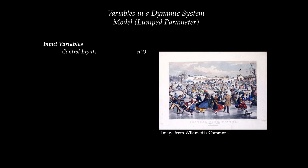We need to distinguish between control inputs and exogenous inputs, sometimes known as disturbances. An exogenous input is one the environment exerts on you that you have no control over. For example, a wind gust or a push from another person while ice skating is an exogenous input. We'll denote control inputs as U(t) and exogenous inputs as W(t).